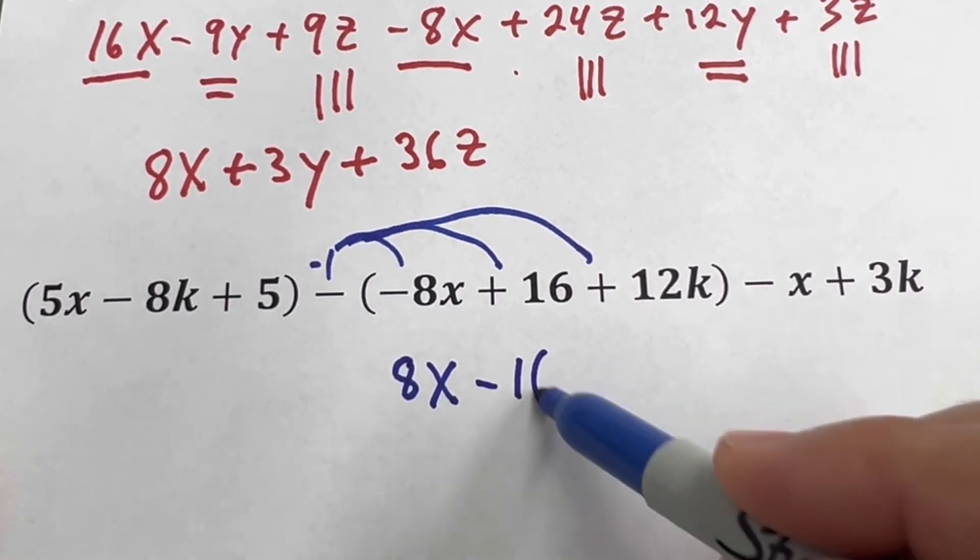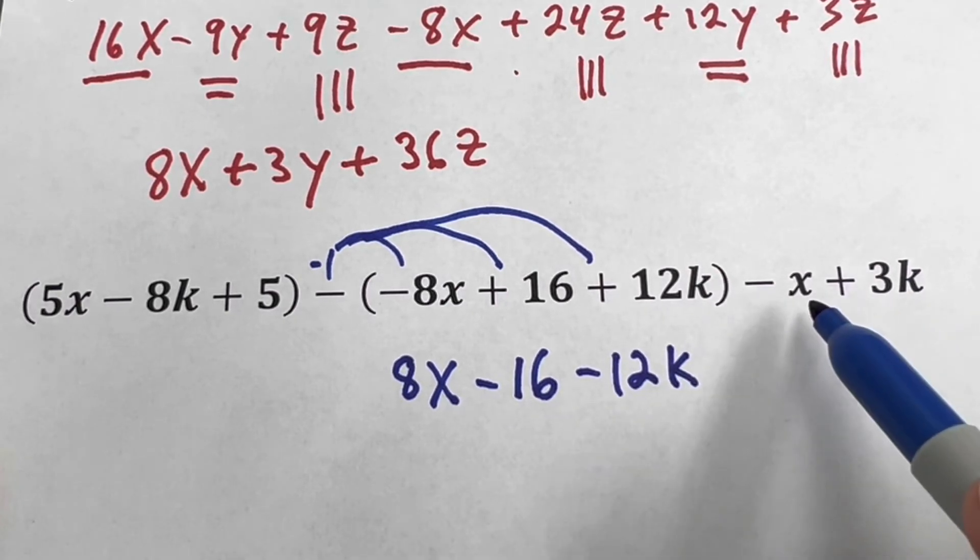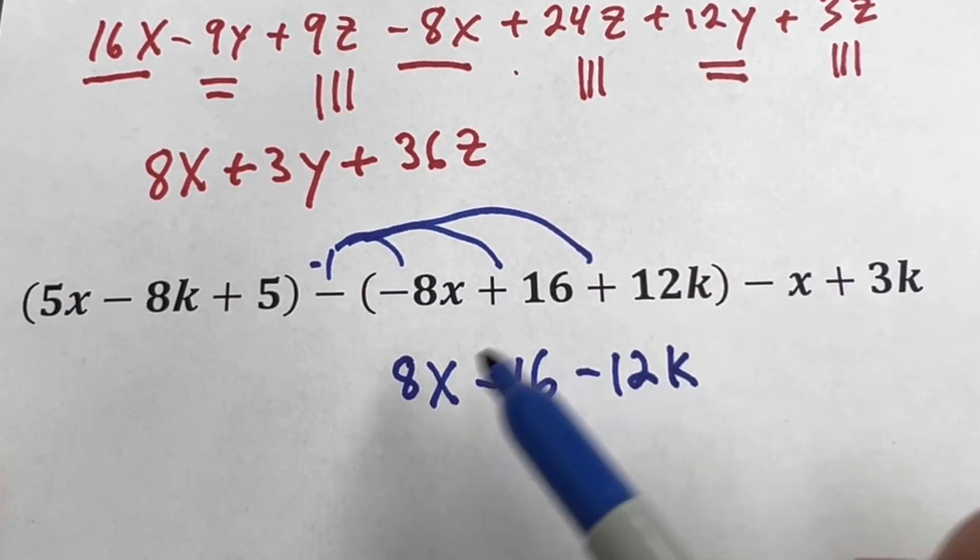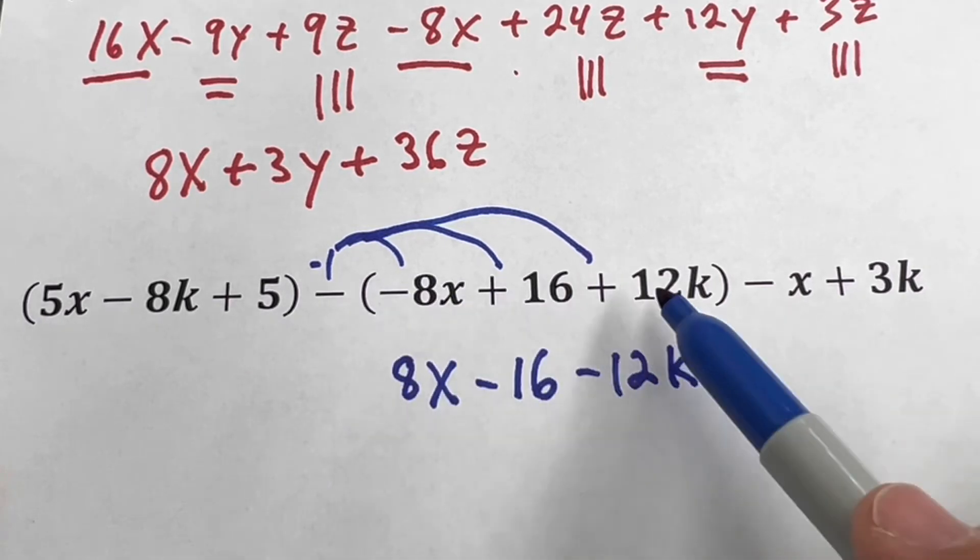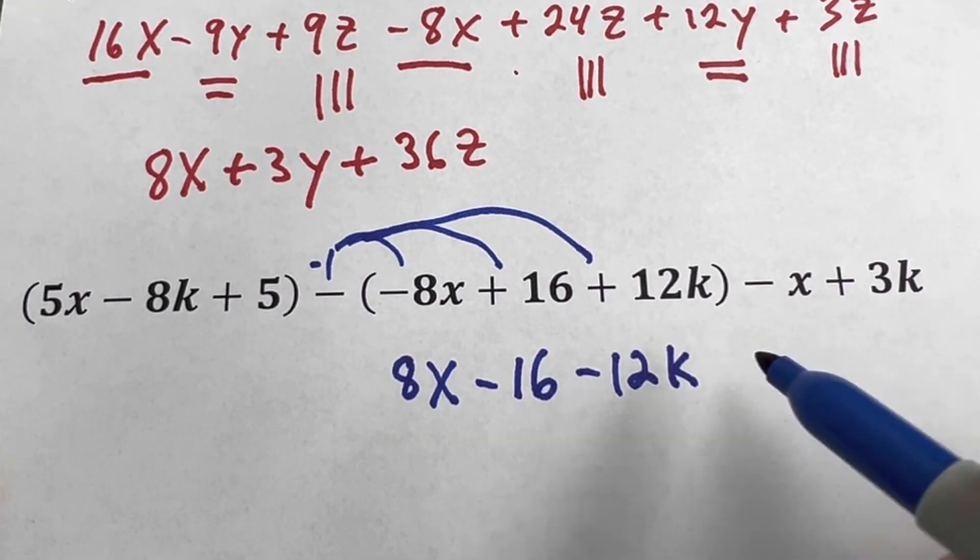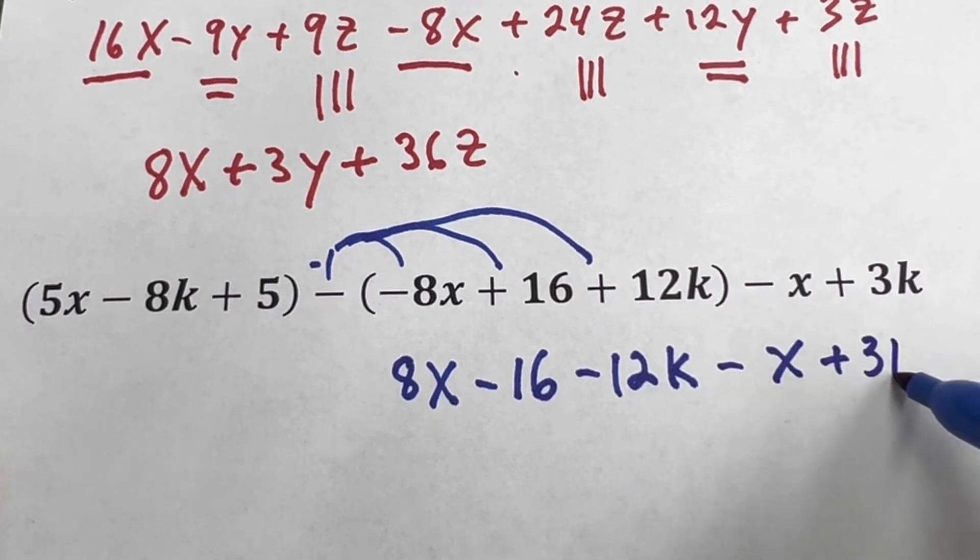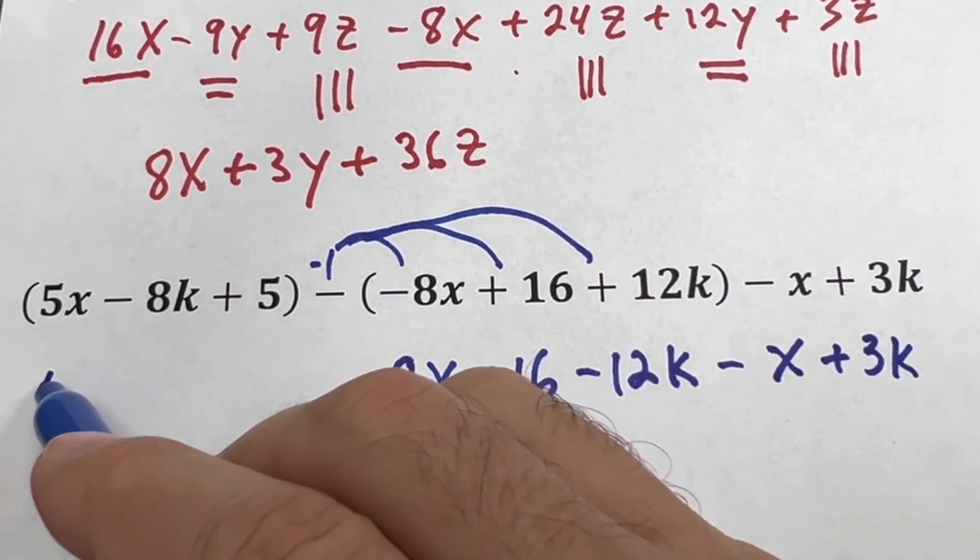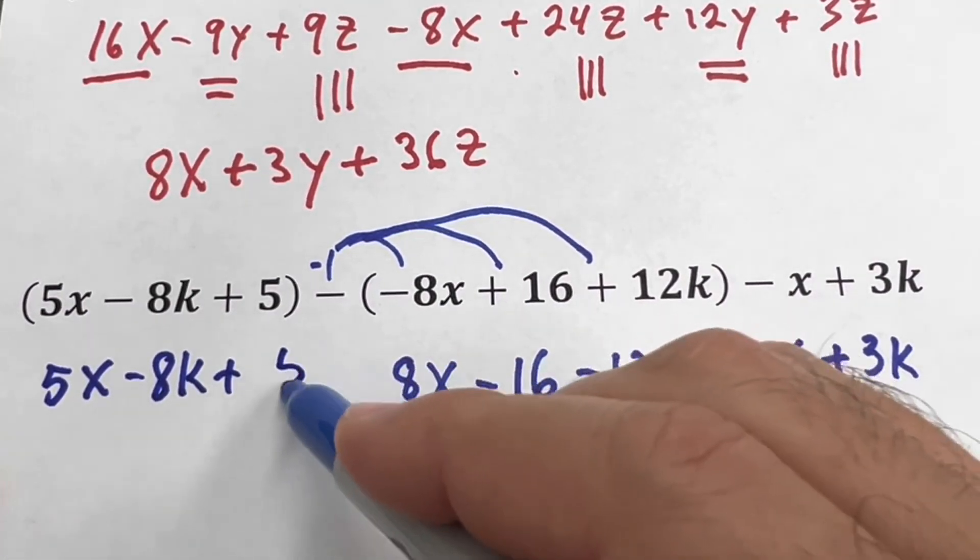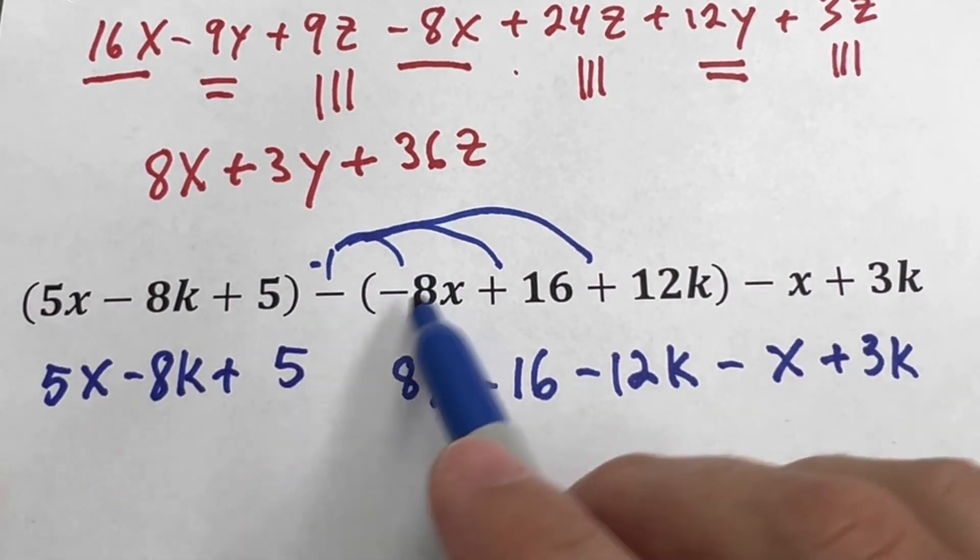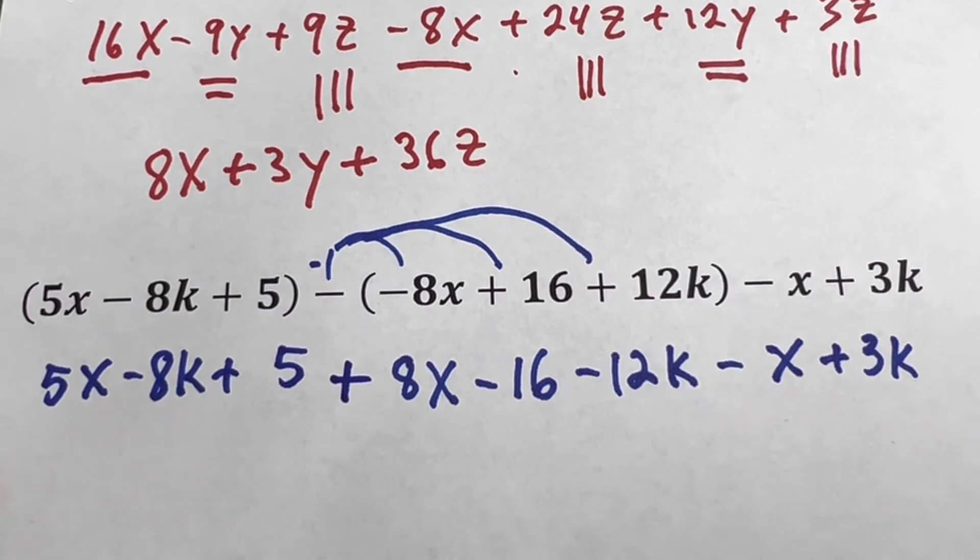Now those two keep the same because they are not affected by the minus. The -1 here is multiplying only the parenthesis, but those two are outside the parenthesis so you don't have to multiply them. You write the first expression the same: 5x - 8k + 5. And now this was a minus here, is plus, so here it's plus.